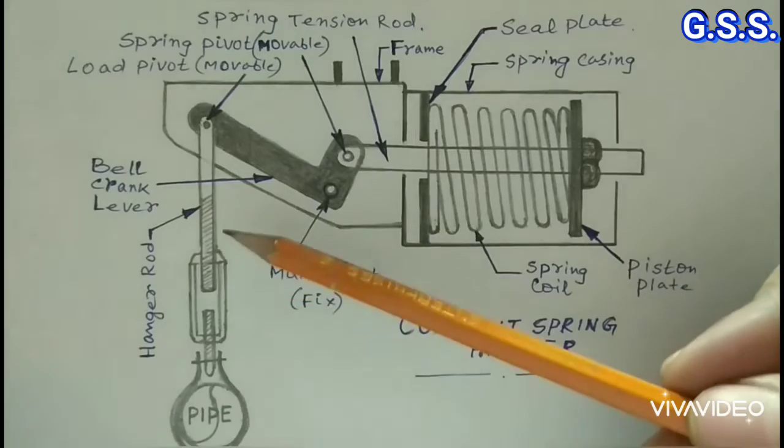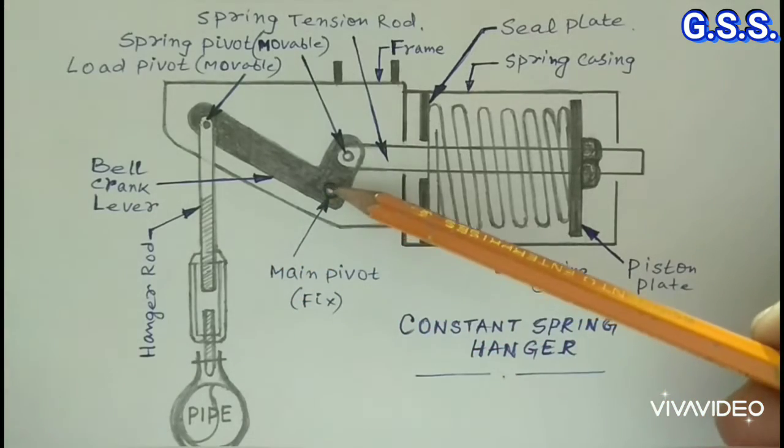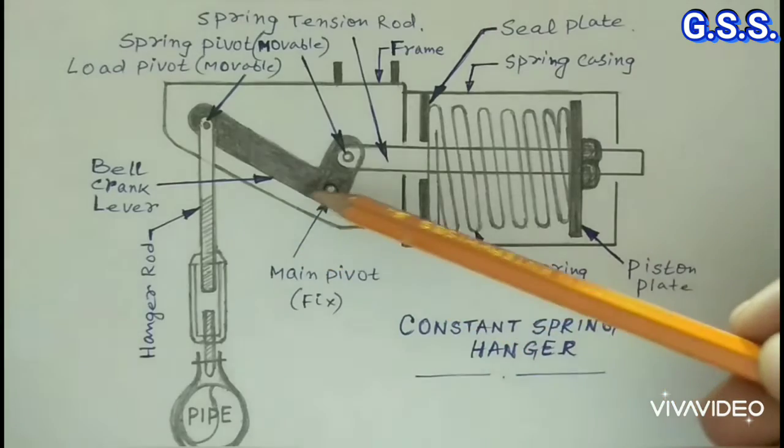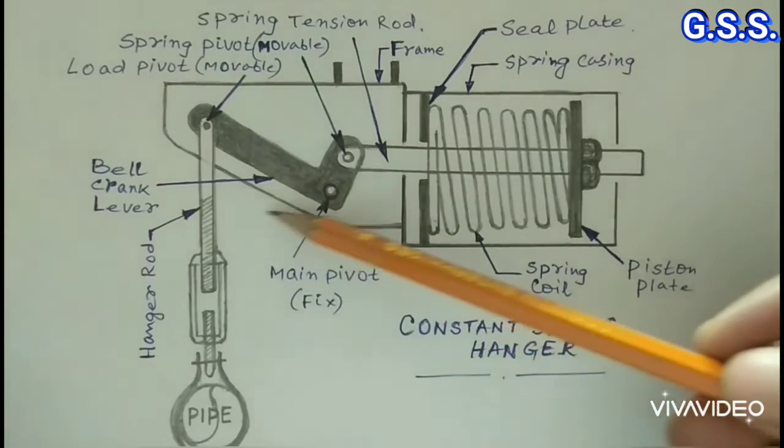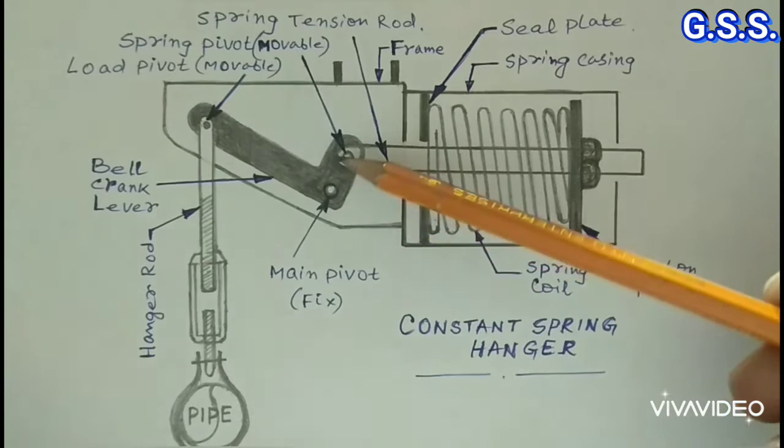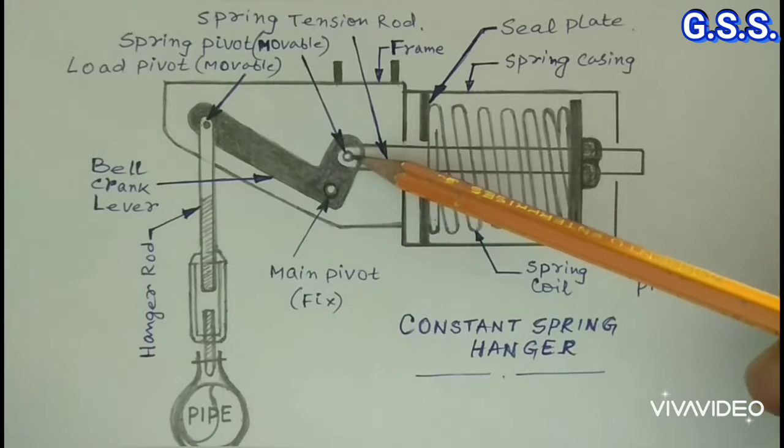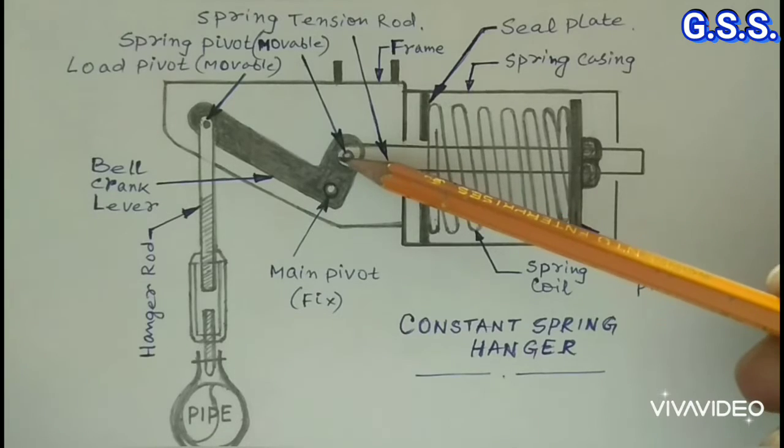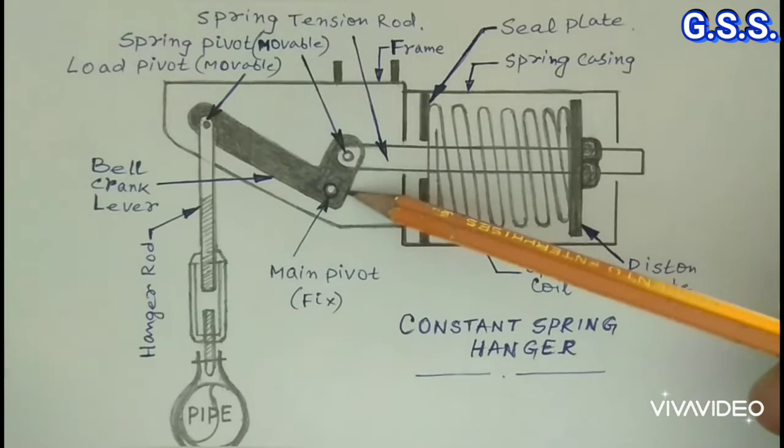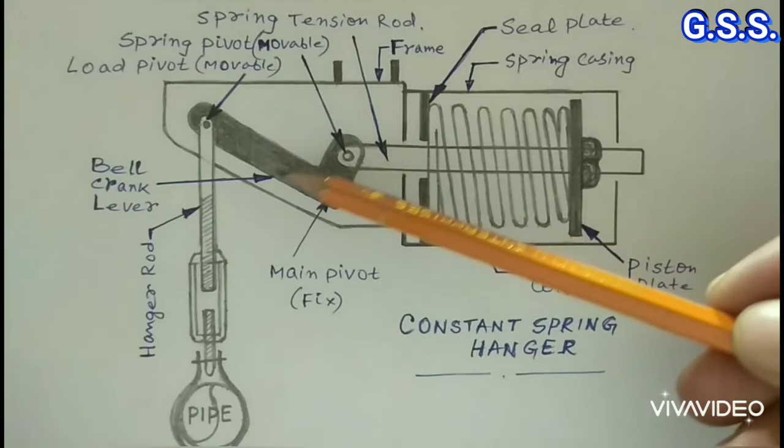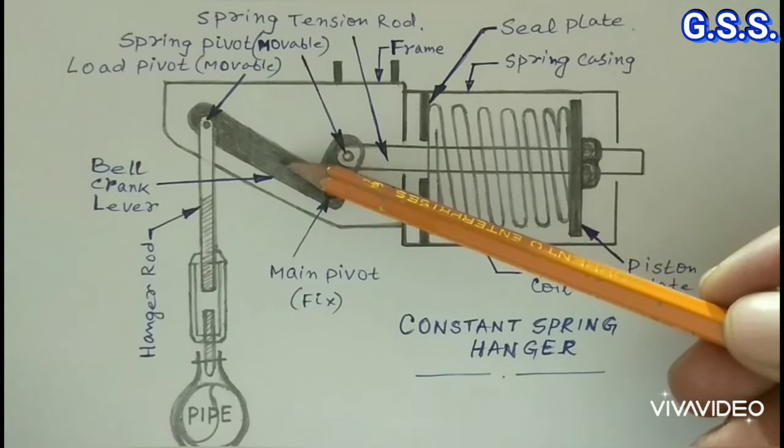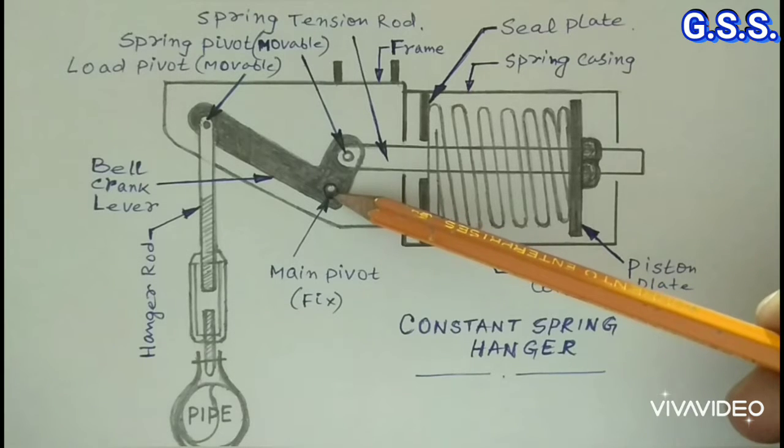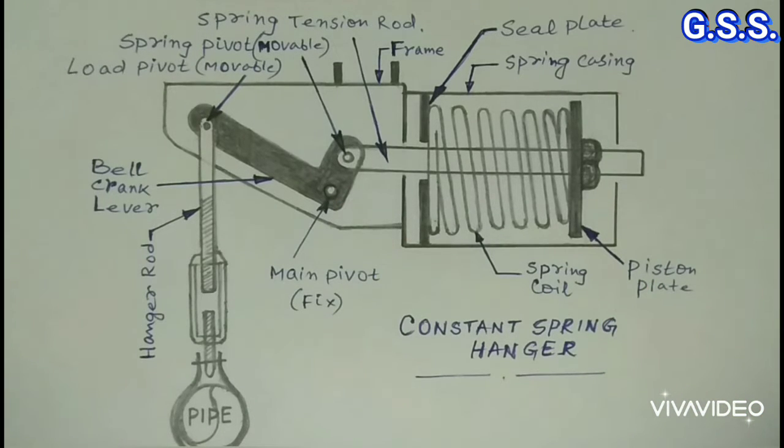The main working principle of constant spring support is the effect of load movement about the main pivot. That means load times this distance is counterbalanced by an equal and opposite spring movement throughout the travel range. The bell crank lever is designed in such a way that the distance from the main pivot changes to compensate for the variable resistance of the spring coil.